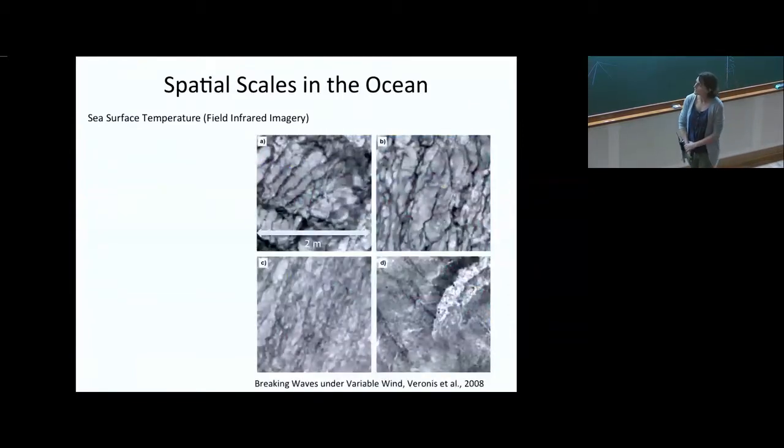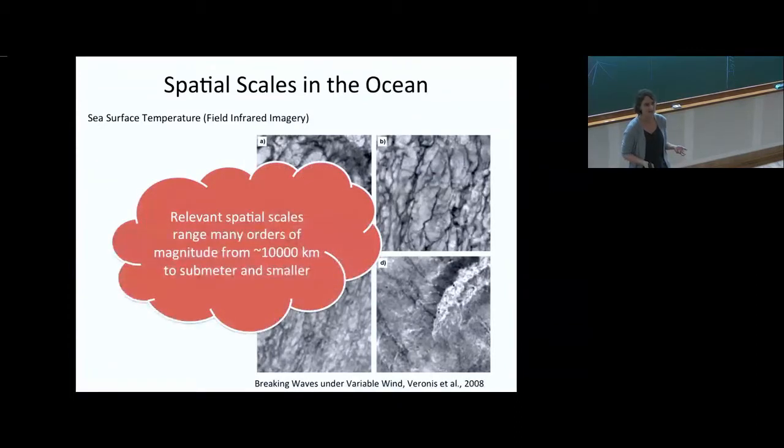And then if you just keep looking, here are some images from Veron in 2008 that are showing two meter boxes of temperature variability on the surface of the ocean. And all of this is associated with different surface breaking of waves. And so when we're thinking about the relevant scales that we care about in the ocean, we're thinking basin scale, global scale from 10,000 kilometers all the way down to sub-meter and smaller.